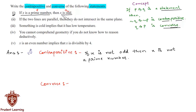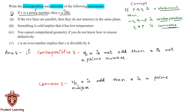The converse is written by interchanging the two parts of the statement. So the converse would be: if x is odd, then x is a prime number. This completes the first part of the question.